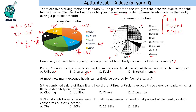At most, how many expense heads can entirely be covered by Akshat's salary? Akshat's salary is 35%. We pick the minimum possible values to cover the most categories. Start with 4, then two 5's, then 8 — that's 22% so far. We can add 11 and also 12, leading to 33 or 34%. We cannot add both the remaining 12s or any higher value like 25. So we can cover 5 categories entirely under his salary. We cannot have a 6th one.